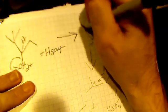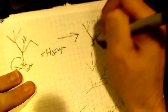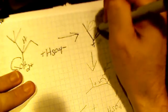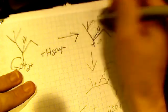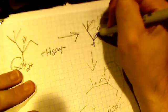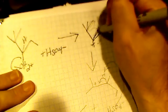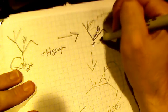And then what happens is, we get a second degree carbocation after the water leaves. This is one carbon attached to two carbons.